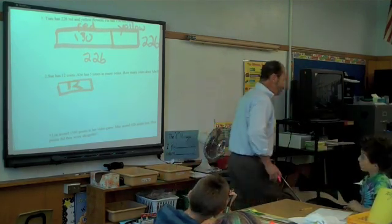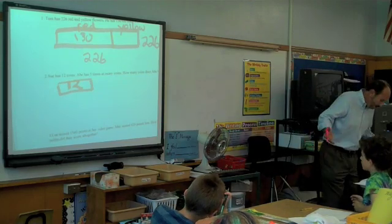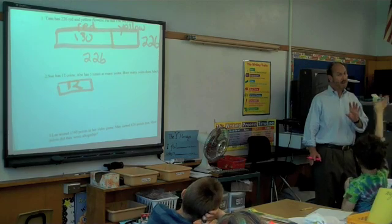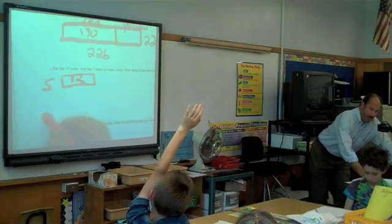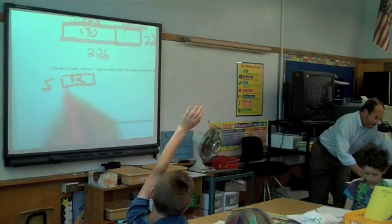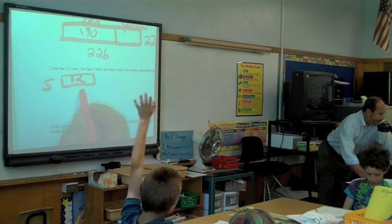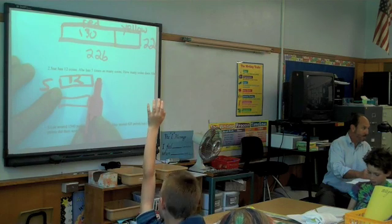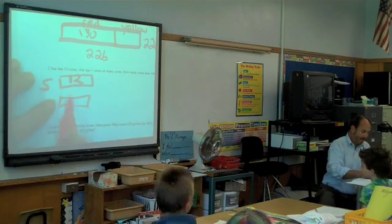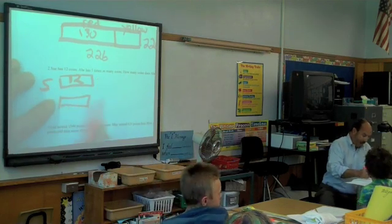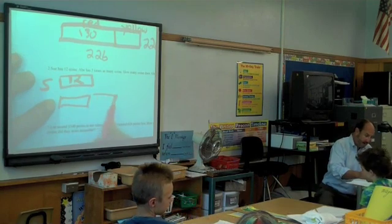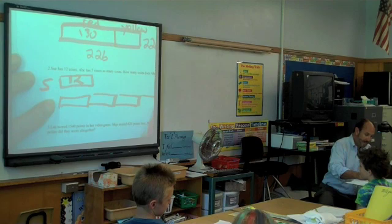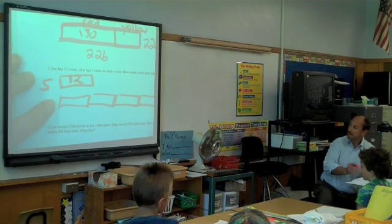Now, how would we draw Abe's? I don't know how many there are, but how would I draw Abe's? This is very hard. If this is Sue, what do we know about Abe? How many of these little bars do we have to have for Abe? It says Abe has how many times? Five. So how many of these little bars do we need? Five bars that are the same size as Sue.